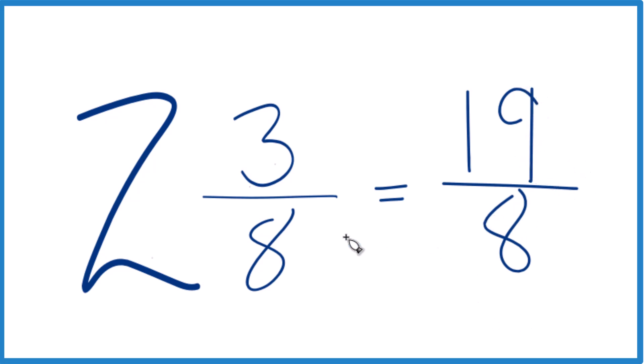So that's equal to the mixed number 2 and 3 eighths. Let's do it one more time. 2 times 8 is 16. 16 plus 3, that gives us 19. That's our numerator. Just bring that denominator across, and you're done.